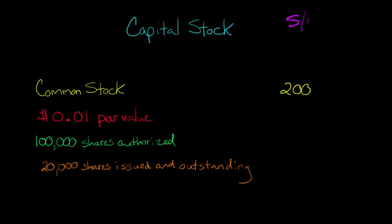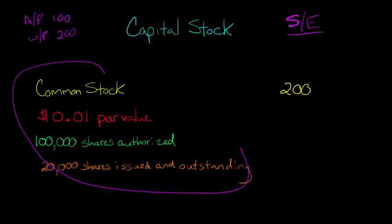The stockholders' equity section of the balance sheet is a little tricky for some people to understand. You get used to seeing things like in the liability section just accounts payable — it's $100, salaries and wages payable is $200 — and then all of a sudden you get to the stockholders' equity section and you see something like this.